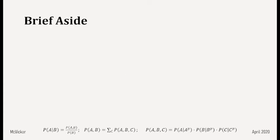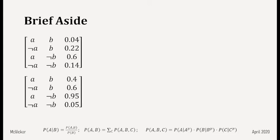A brief aside — let's look at the numerical difference between the probability of A and B versus the probability of A given B. With two probability distributions, the top one sums to 1 across A and B — that's the joint probability P(A,B). The bottom one sums to 1 for each case of B — that's the conditional probability P(A|B), where for each case of B there is a full probability distribution of A.